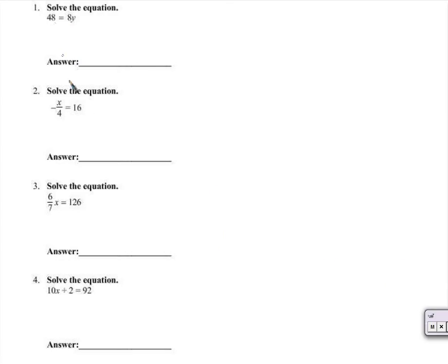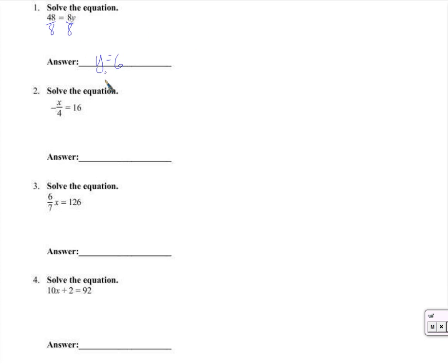We have 8y equals 48. I want to divide by 8 on both sides and get y equals 6. Now let me talk about this for just a second. The reason why 8y over 8 can become y is because the 8 divides the 8.